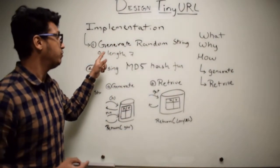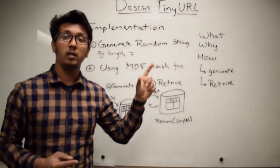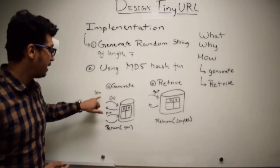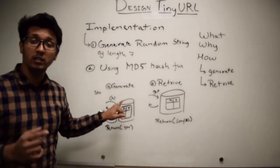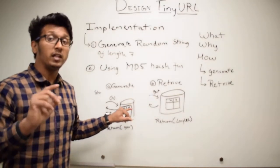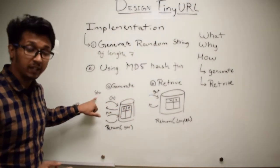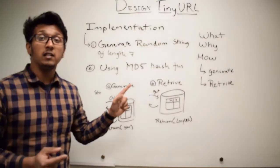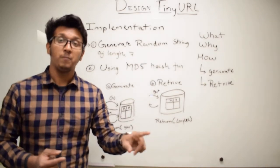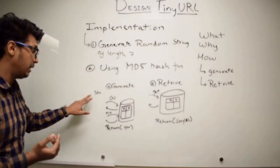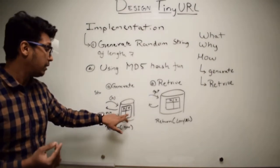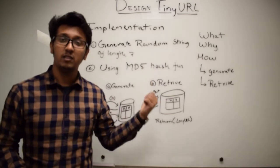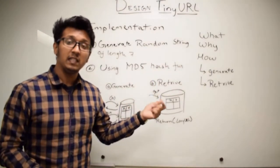In the random function, whenever a user enters their long URL into your website, in the background we create a random string and then check in our database whether it is already present or not. If it is present, we go back and create another random string and check again. This loop continues until we find a key that is not present in the database. Once we confirm the key is not present, we store the long URL with that key in the database and return the short URL to the user. This is the implementation of the generate function.